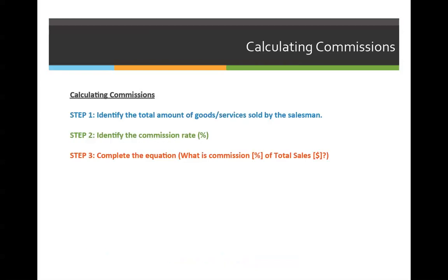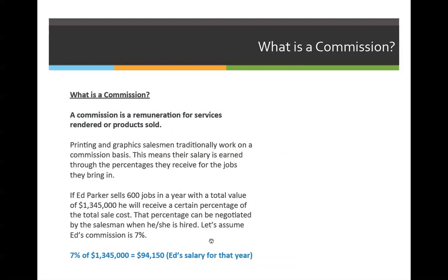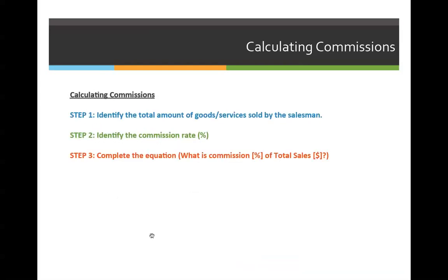Step two: you must identify the commission rate. The commission rate will change depending on which problem you're working on, what company you work at, who the salesman is, etc. In our problem, Ed's commission rate is 7%. Once we know the answers to steps one and two, we can complete the equation — in our case, what is 7% of $1,345,000 — because those are the answers we got for steps one and two.